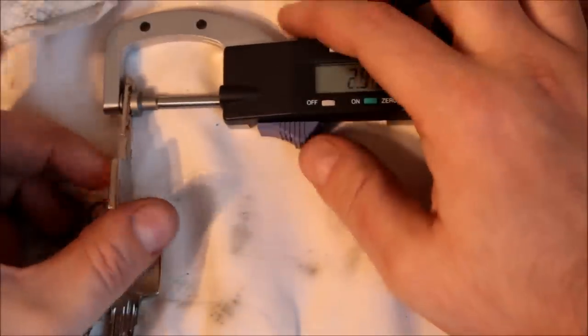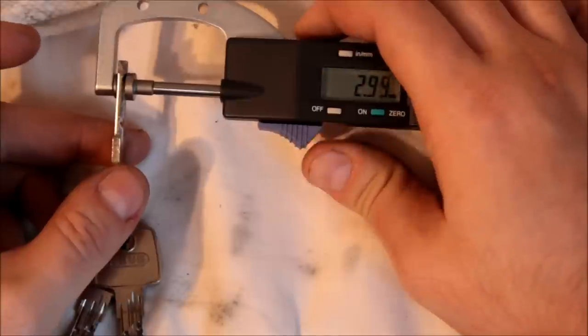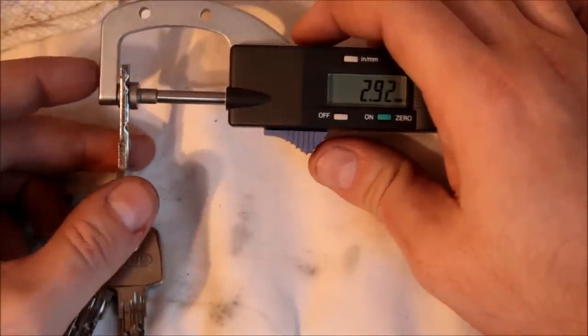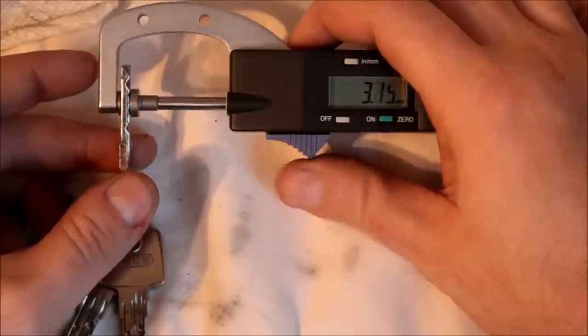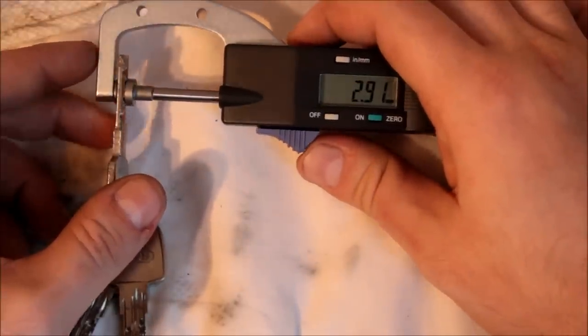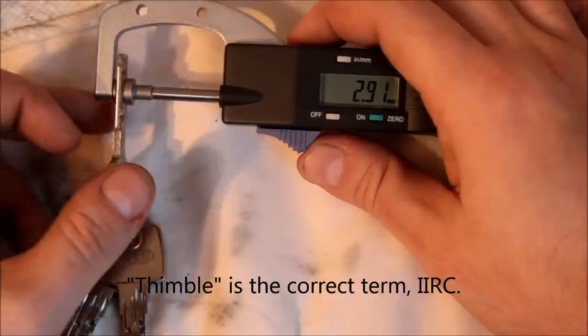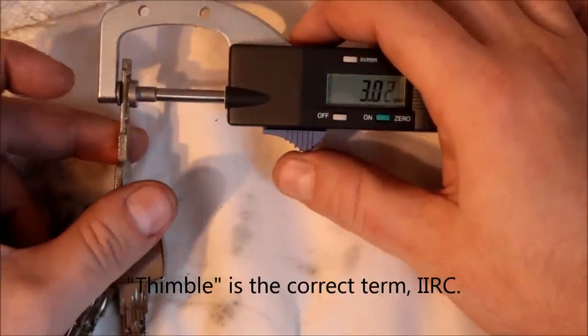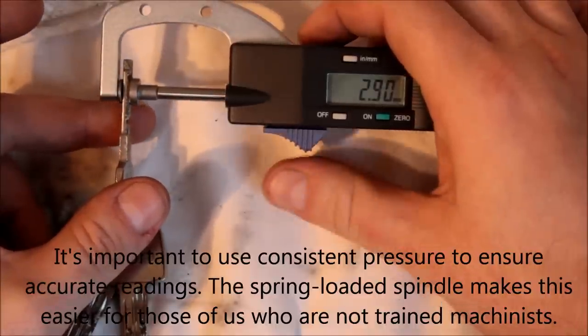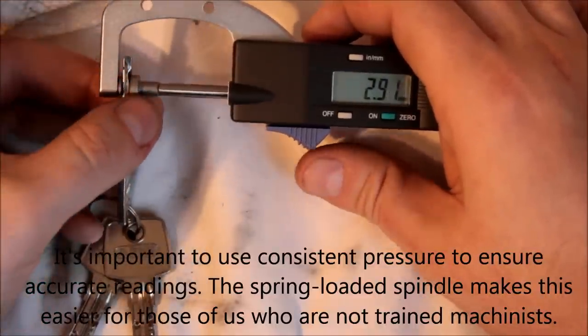Another nice feature, if you're using the traditional micrometer, you have to develop a feel for how much tension to put on the spindle. This has a spring, which I would assume is calibrated to give you a pretty good reading. So you can just kind of come in and out.